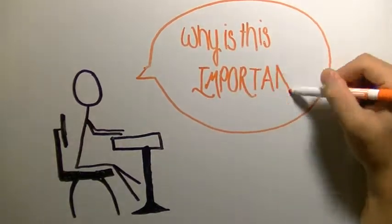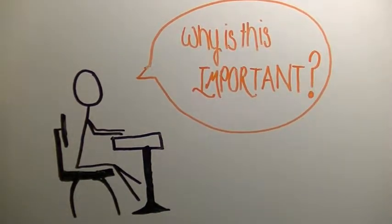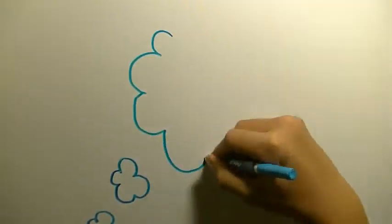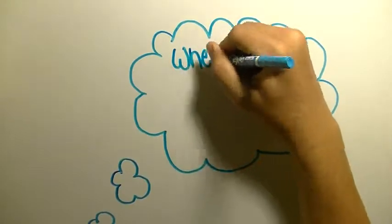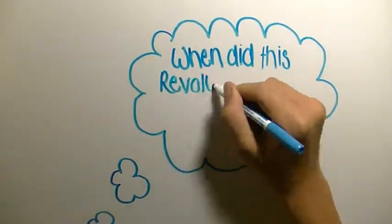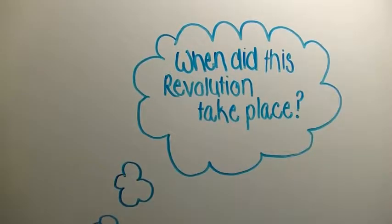You're probably sitting there wondering: why is this important? It's important because the revolution created the modern-day country of Italy, which is a trade partner with the United States of America. Now Italy is a major tourist attraction and one of the most popular countries in the world. This revolution took place in the early to mid-19th century.